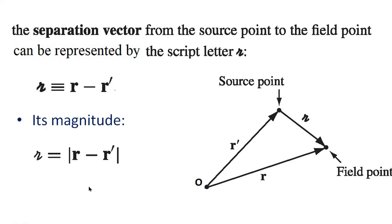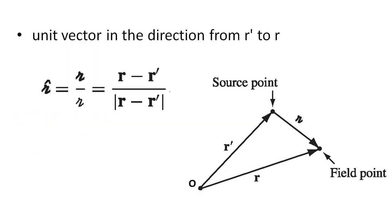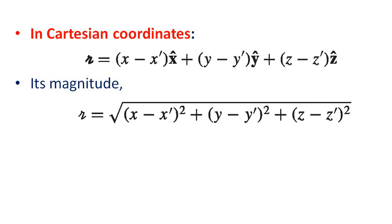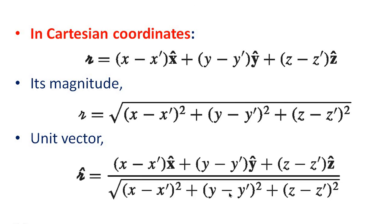The unit vector from R prime to R is represented by R cap, equal to vector R divided by script R — that is, (vector R minus vector R prime) divided by the magnitude of (R minus R prime). In Cartesian coordinates, script R equals (X minus X prime) x-cap plus (Y minus Y prime) y-cap plus (Z minus Z prime) z-cap. Its magnitude is the square root of (X minus X prime) squared plus (Y minus Y prime) squared plus (Z minus Z prime) squared, and the unit vector R cap equals vector R divided by its magnitude.